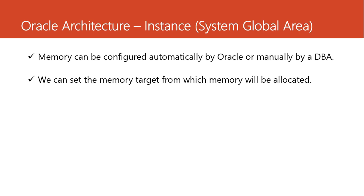How do we configure memory in Oracle? We have two ways. We have the dynamic, or automatic, memory configuration where the memory is configured by Oracle automatically — you don't need to do anything. The only thing you need to do is provide Oracle with the memory target: how much memory you want to use as a benchmark when allocating memory to different components. With the manual approach, it is the DBA who determines which component needs more memory and which needs less. It's really risky to leave everything managed manually by the DBA. Let us look at everything in an illustration.